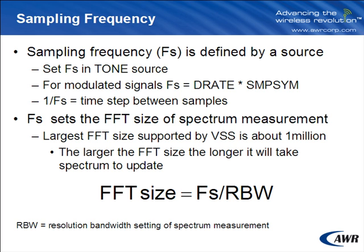First and foremost, the sampling frequency of a system is defined by a source. When working with a tone source, you can explicitly set the sampling frequency within its parameter page. When working with modulated signals, the sampling frequency is defined by the data rate times samples per symbol.